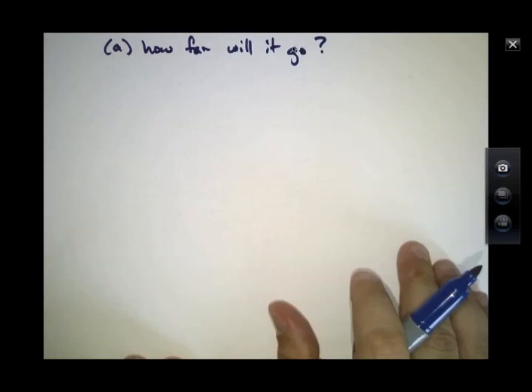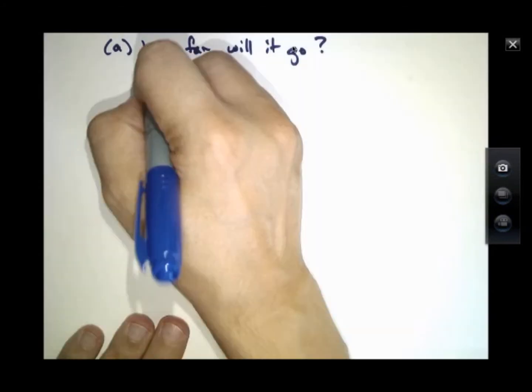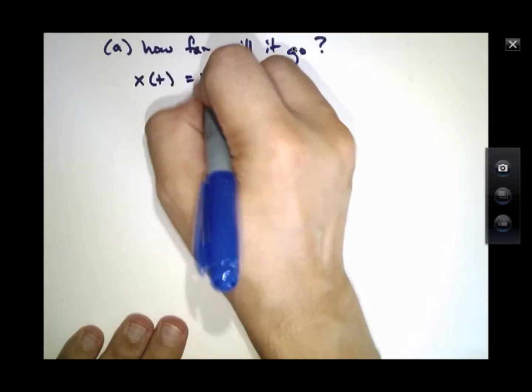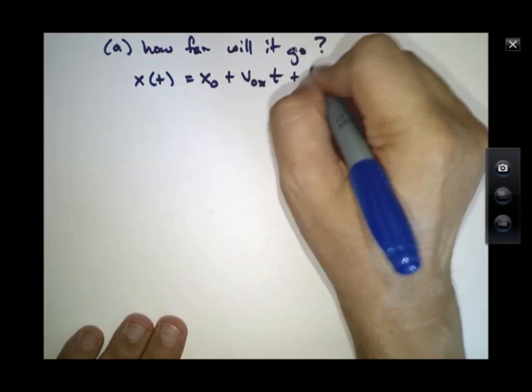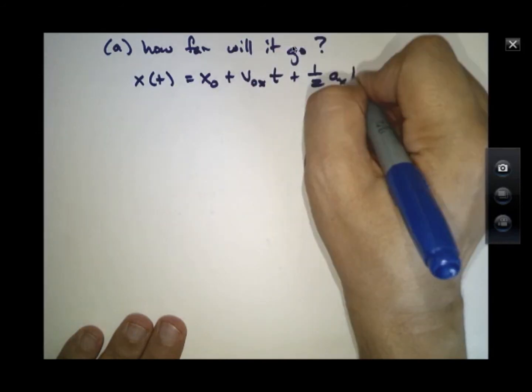The other question we asked in Part A was how far will it go? Well, the equation of motion in the x-direction is x equals x0 plus v0x times t plus one half ax t squared.